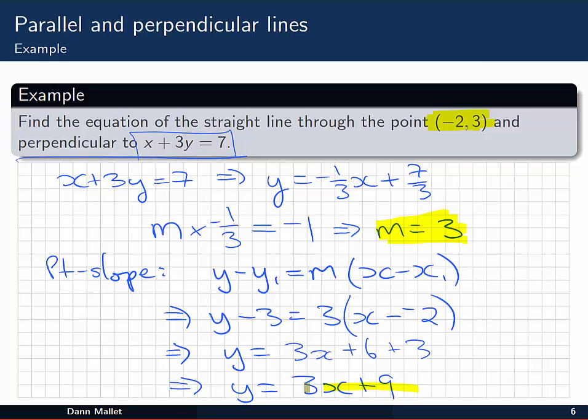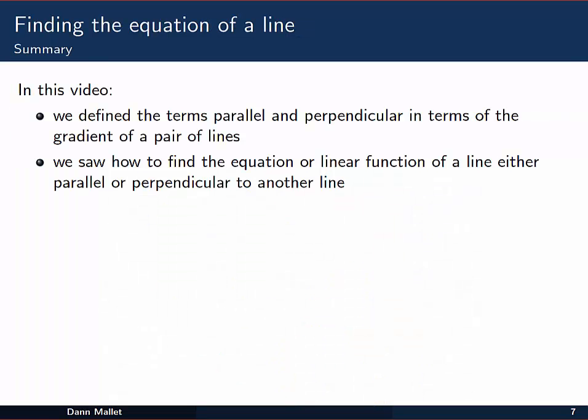And that's the one that we want. So y equals 3x plus 9, will have a slope, multiplied by this slope will give minus 1, so the two lines are perpendicular. And it's going to pass through the point that we want.